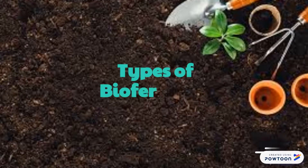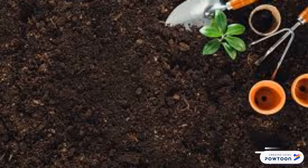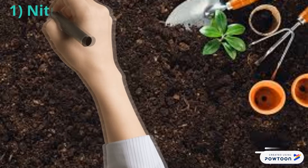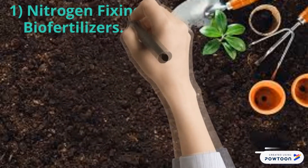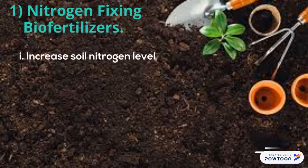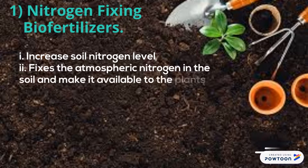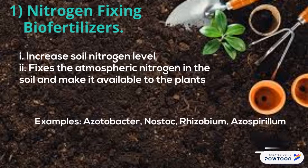Types of biofertilizers: The various types of biofertilizers which help the plant to grow at different levels of its growth are: 1. Nitrogen-fixing biofertilizers, which increase soil nitrogen level and fix atmospheric nitrogen in the soil, making it available to the plants. Examples include Azotobacter, Nostoc, Rhizobium, and Azospirillum.